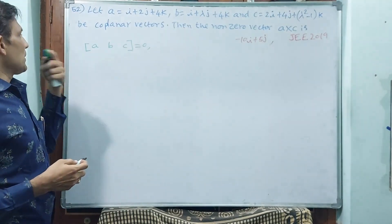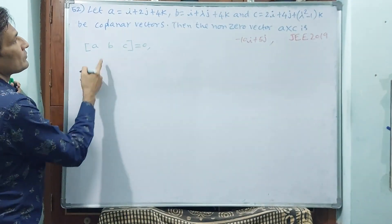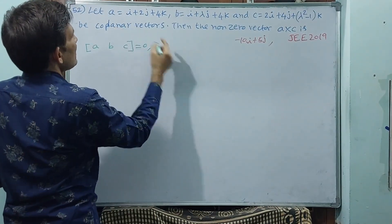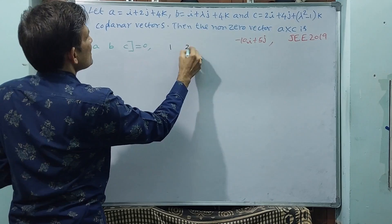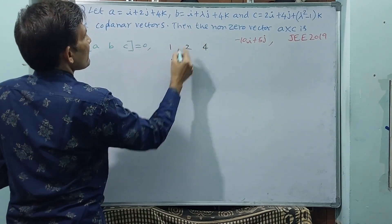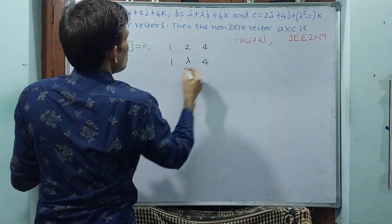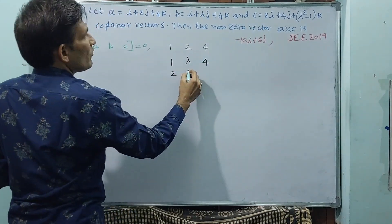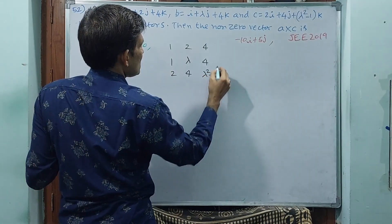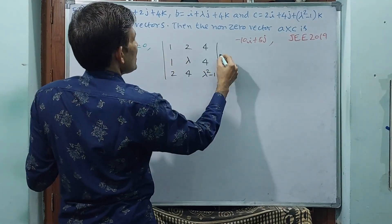First, let's set up the scalar triple product. The determinant is: first row 1, 2, 4 (from A); second row 1, lambda, 4 (from B); third row 2, 4, lambda squared minus 1 (from C). This determinant is equal to 0.